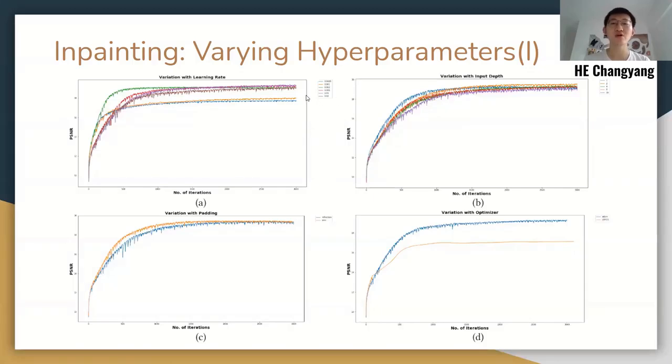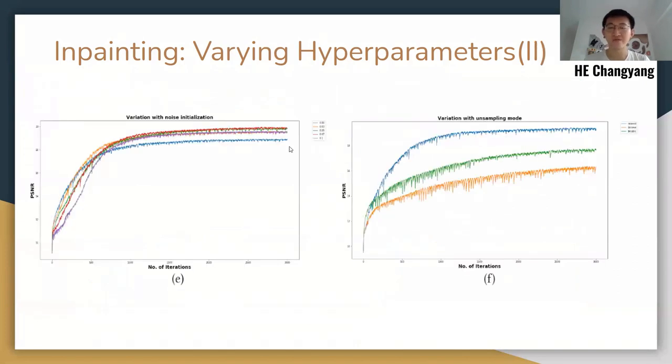This is Changyang He, and I'm going to introduce our experiments on inpainting and restoration. This figure shows experiment results of inpainting under different hyperparameters, including learning rate, input depth, padding, and optimizer type. As we can see, all these hyperparameters except for padding have substantial influence on the PSNR performance. And for noise initialization and the upsampling mode, both factors influence the performance of inpainting. The optimal upsampling method for inpainting is nearest interpolation in blue line, which is different from other tasks.